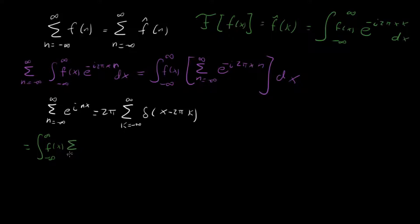We have k going from minus infinity to infinity delta of minus 2 pi x minus 2 pi k dx. And let's not forget, we also have this 2 pi out in front.